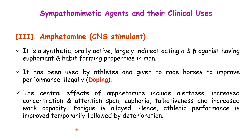Amphetamine is a synthetic, orally active, largely indirect-acting alpha and beta agonist with euphoria and habit-forming properties in humans — it is an addictive drug. It has been used by athletes and given to racehorses to improve performance illegally, which is known as doping. Central effects of amphetamine include alertness, increased concentration and attention span, euphoria, talkativeness, and increased work capacity. Fatigue is delayed, so athletic performance is improved temporarily, followed by deterioration.